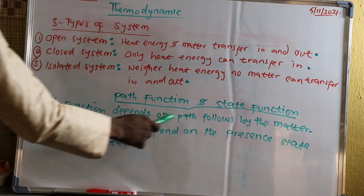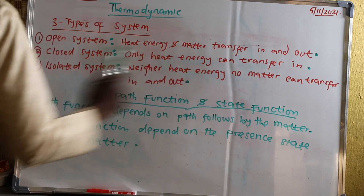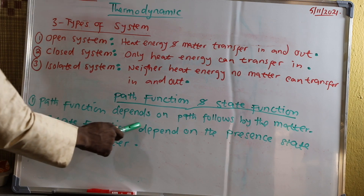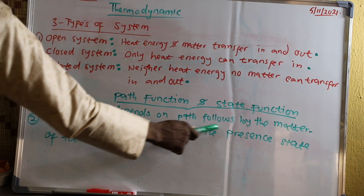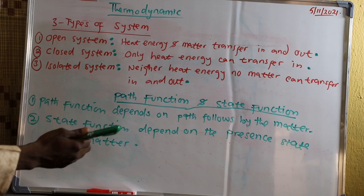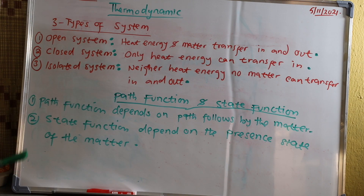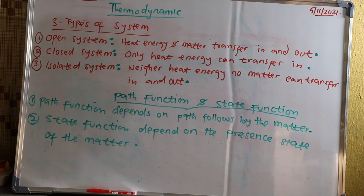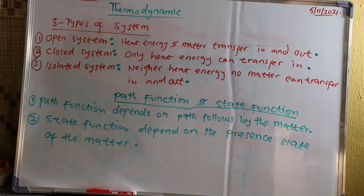Then we go to path function and state function. Path function depends on the path followed by the matter — the path that the matter follows to become what it is. Then state function depends on the present state of the matter — the present state of the matter is what we call the state function.